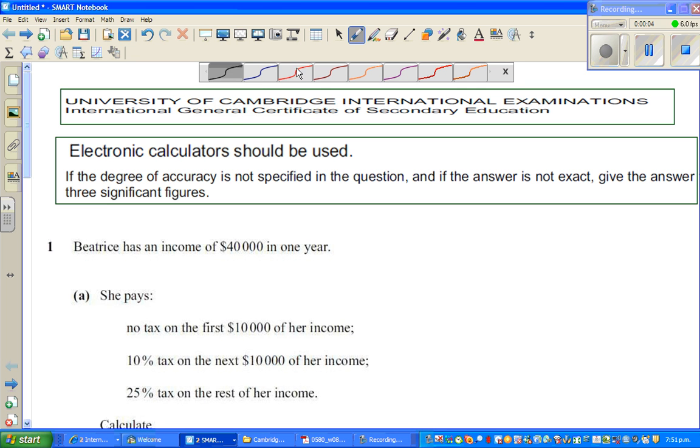Let us look at some examples on percentage, ratio and proportion. These questions I have taken from the University of Cambridge International Examination. You can use an electronic calculator. And if the degree of accuracy is not specified in the question, and if the answer is not exact, give your answer in three significant figures. So these are two important things for us.